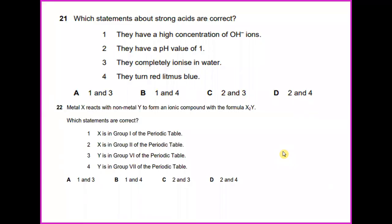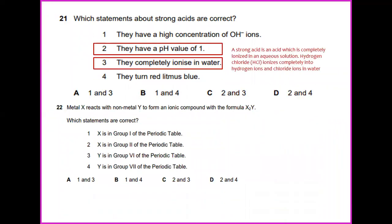Question number 21. Which statements about strong acid are correct? A strong acid is an acid which is completely ionized in an aqueous solution. Hydrogen chloride ionizes completely into hydrogen ions and chloride ions in water, which is option number 3. And if it is acid, they have a pH value of 1. So the answer will be 2 and 3.